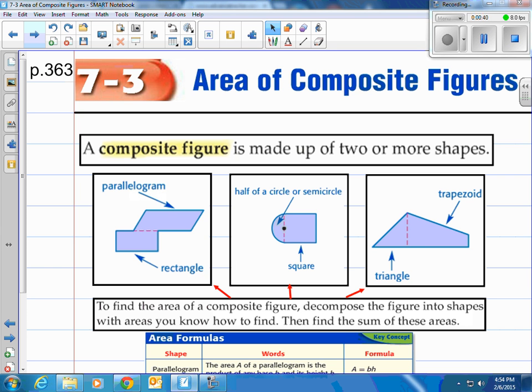You can see the first one's a parallelogram and a rectangle if we cut it right there with that red dashed line. Same with the middle one, that's half of a circle or a semicircle, meaning we could find the area of a circle and then cut it in half, and then we have that little piece right there. Of course there's a square in there. And then we've got this shape, which we have to cut down again on that red dotted line, we'll have a triangle and a trapezoid. So we would then find the area of those individual shapes, the two shapes, and then we would add them together, and that would be the total area.